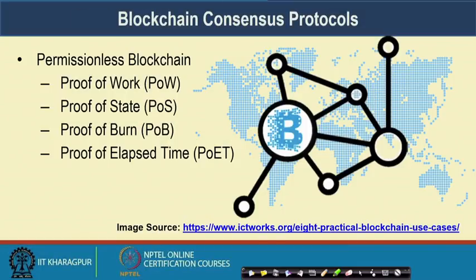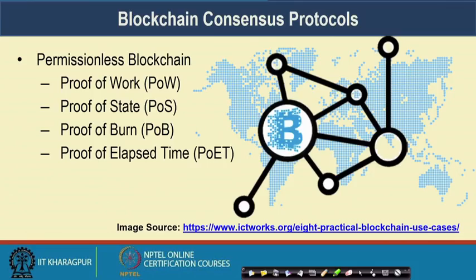In the permissionless model of Blockchain, which is an open environment where anyone can join, we have looked into different groups of consensus protocols like Proof of Work — the first consensus protocol proposed by Satoshi Nakamoto, sometimes called the Nakamoto consensus. We then looked at problems with Proof of Work due to mining share and moved to other consensus protocols, such as Proof of Stake, Proof of Burn, and Proof of Elapsed Time.